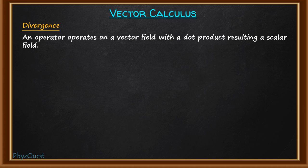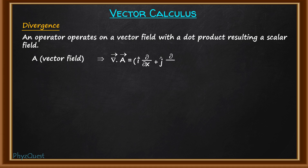Suppose we have a vector field A. When the del operator operates on A with a dot product, the answer will be equal to (i-cap ∂/∂x + j-cap ∂/∂y + k-cap ∂/∂z) · A, which gives the divergence.